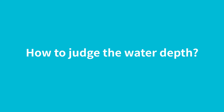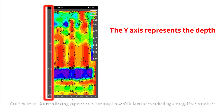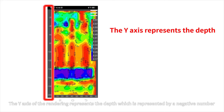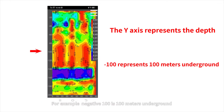How to judge the water depth? The y-axis of the rendering represents the depth, which is represented by a negative number. For example, negative 100 is 100 meters underground.